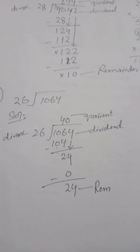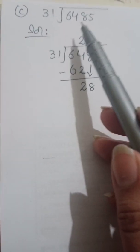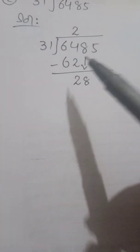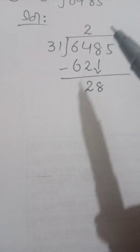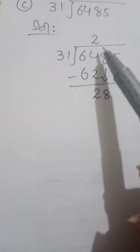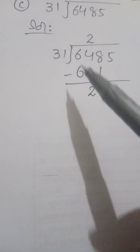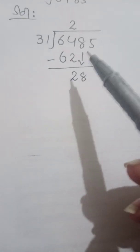Now I will solve Part C for you. Part C is 6485 divided by 31. Since the divisor has two digits, we take two digits from inside: 64. We multiply 31 by 2 to get 62, which is the nearest smaller number to 64.